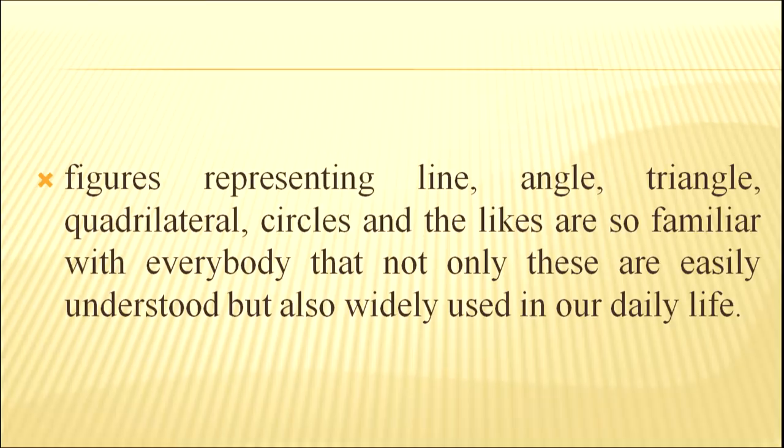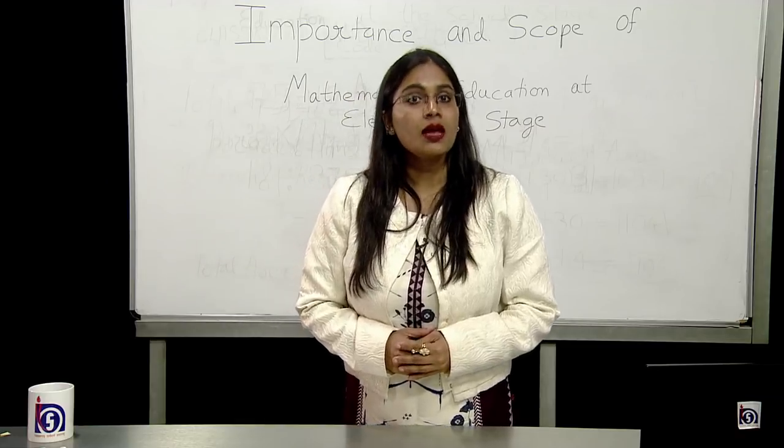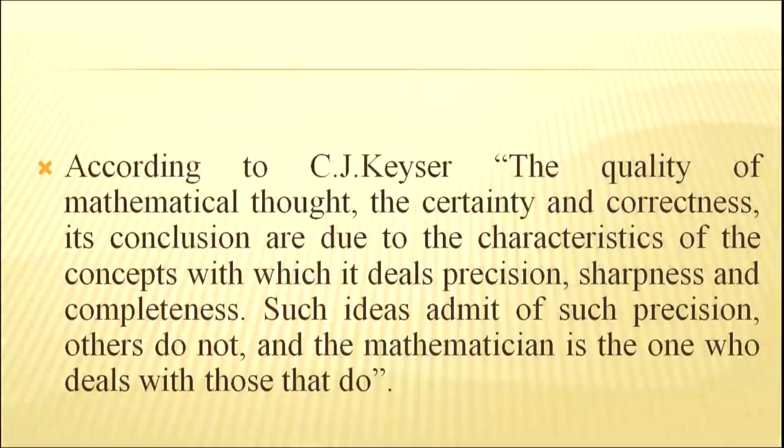Mathematics is precise. Precision is that nature of mathematics which deals with accuracy and exactness and leaves no scope for doubt. According to C.J. Kessel, the quality of mathematical thought, the certainty and correctness, its conclusions are due to the characteristics of the concepts with which it deals—precision, sharpness and completeness. Such ideas admit of such precision; others do not, and the mathematician is the one who deals with those that do.